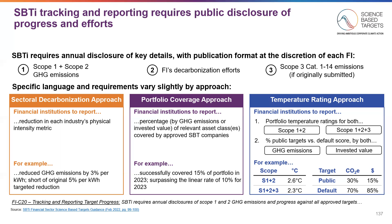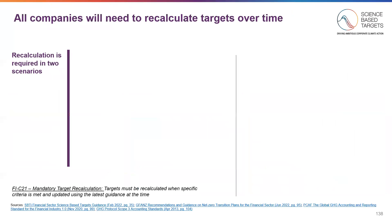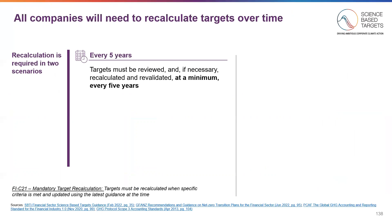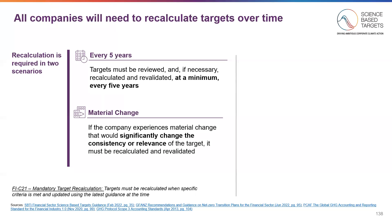By annually disclosing progress, financial institutions can hold themselves accountable and continue to make progress against their targets alongside their clients and portfolio companies. All companies will need to recalculate targets over time. There are two scenarios where this is required: targets must be reviewed and, if necessary, recalculated and validated every five years; and if a company experiences a material change that would significantly change the consistency or relevancy of the target, it must be recalculated and revalidated.